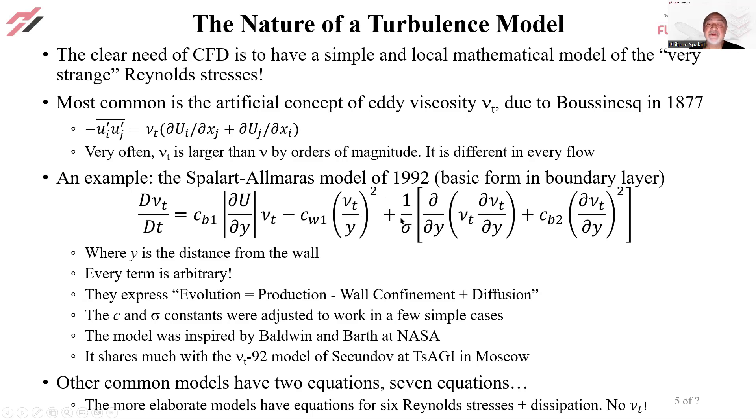And then we have a diffusion term, which is made of two parts. The first part is a classical viscous term with the eddy viscosity doing the mixing. And then plus a term that comes out of just a human mind that has the derivative, so the gradient of νt squared.